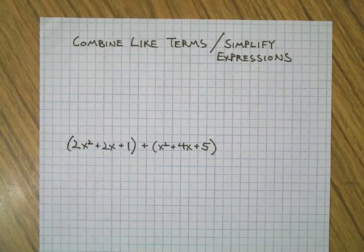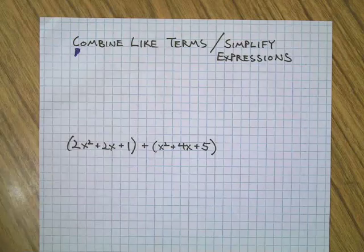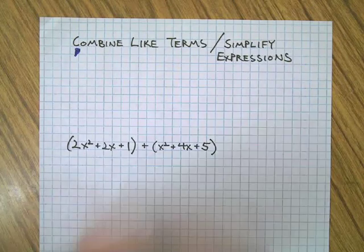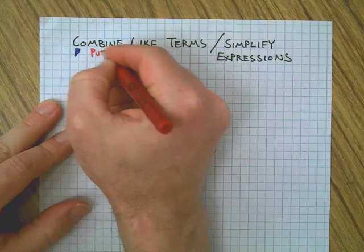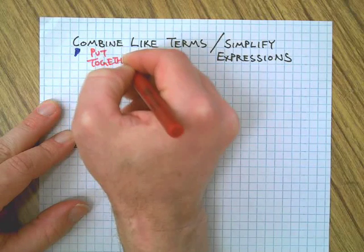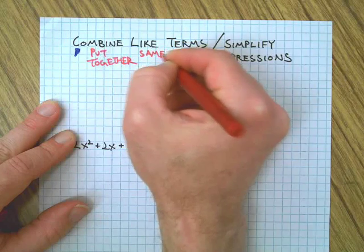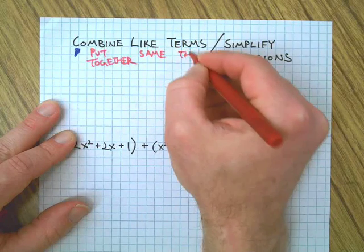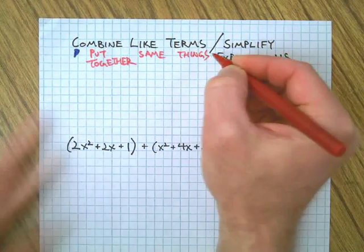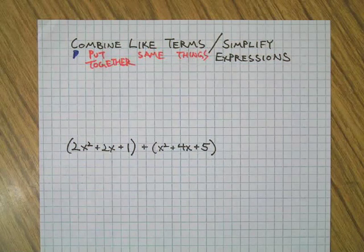When we say combine like terms, that really means, I'll use red here, combine, put together. Like means same, and terms means things. So if you don't know what combine like terms means, it's the same as saying put together the same things. For example,